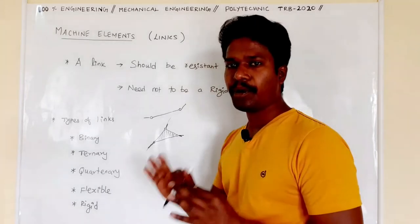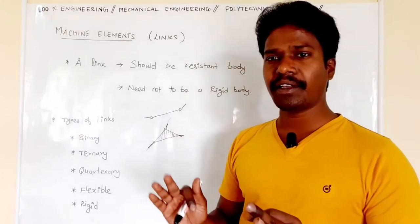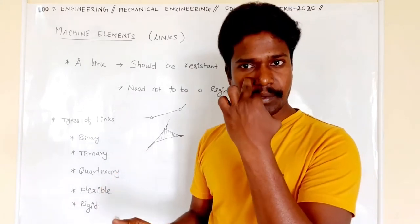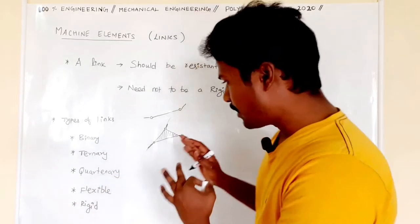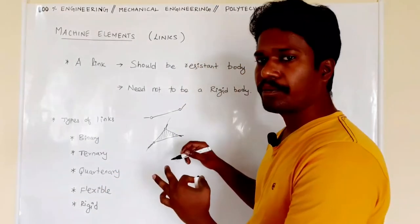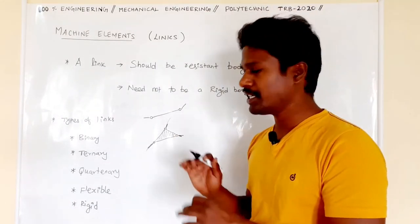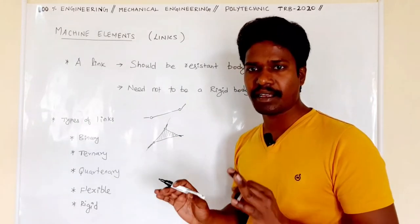At this end also a link, at this end also a link. So on one ternary link, three additional links will be joined. Three other machine elements will attach. Such a link is called a ternary link.